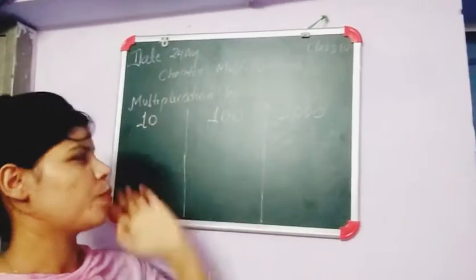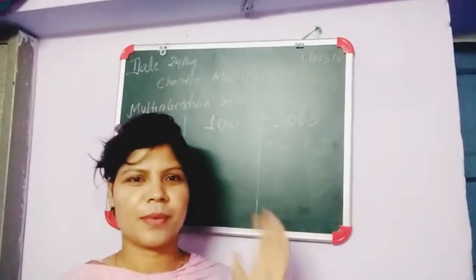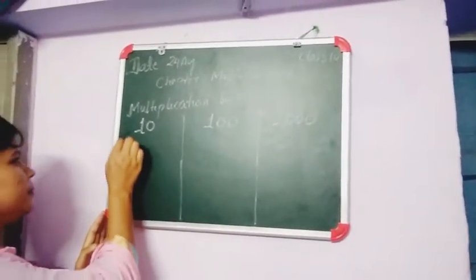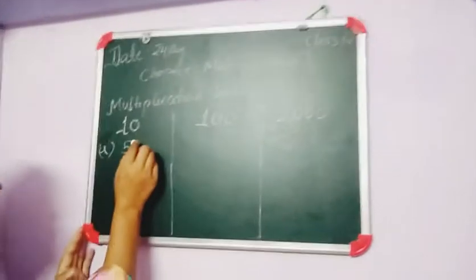Let us come to our topic, when a number is multiplied by 10, 100, and 1000. Suppose I am writing here a number, suppose 53.